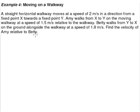Another moving walkway type of question. A straight horizontal walkway moves at the speed of 2 meters per second in the direction from a fixed point X to a fixed point Y. We'll always try to illustrate all this information in the form of a diagram. So we have a fixed point X and of course we have a fixed point Y. Now there is this walkway that travels in this direction at the speed of 2 meters per second.